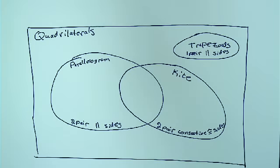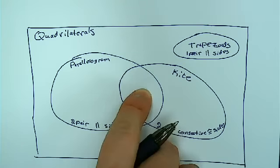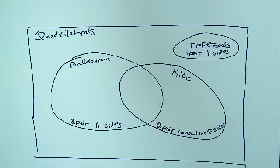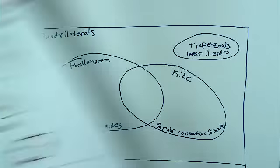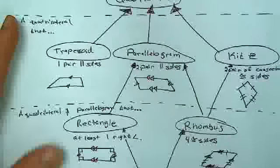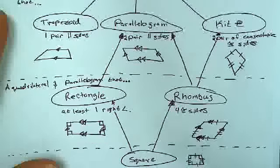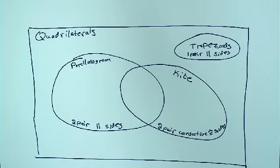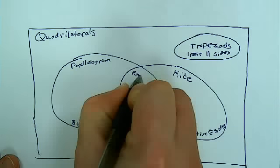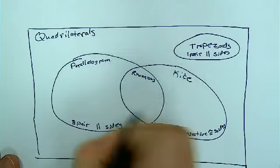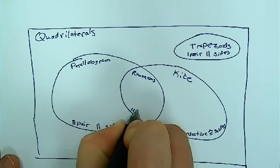Now I drew that way on purpose because I know ahead of time that there is an overlap here. If I look back at the diagram, my tree diagram, look real quick, what's the overlap between parallelograms and kites? Rhombus. So that's what I'll label this thing right in here as a rhombus, which has four congruent sides.